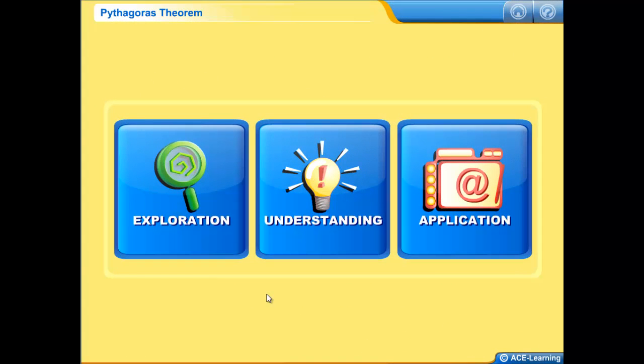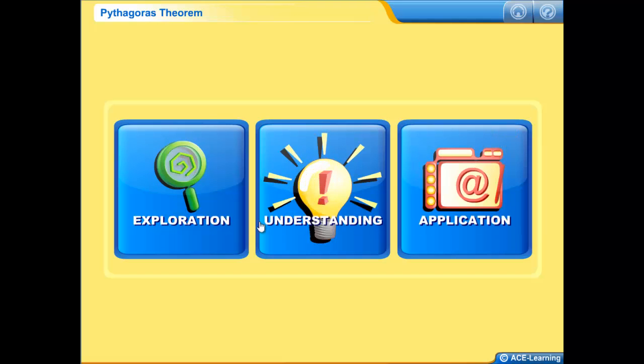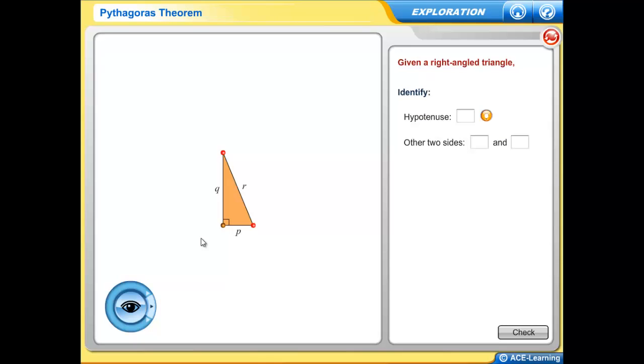Now let's look at the program proper. Each EA comes in three sections: Exploration, Understanding, Application. All the exercises in each section are randomly generated such that each student receives a unique set. Here in the Exploration section, students refer to the guided worksheet to begin on their exploratory journey.